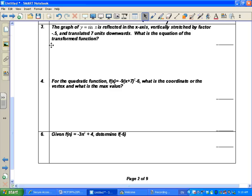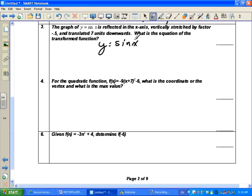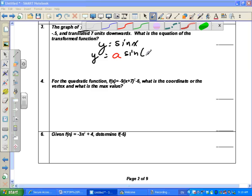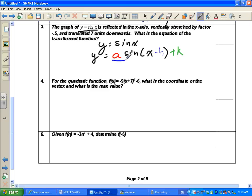Okay, the graph of y equals sine x is reflected on the x-axis, vertically stretched by a factor of negative 0.5, translated 7 units downwards. What is the equation of the transformed function? So if you guys remember, our original graph is y equals sine x. We write it as y is equal to a sine bracket x minus h plus k.